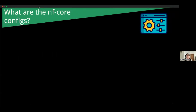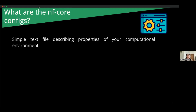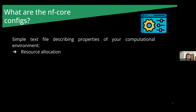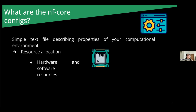What are the NFCore configs? They are simple text files that describe the properties of your computational environment, which is basically resource allocation — managing hardware and software resources to run processes in a computing environment. By hardware resources, I mean CPUs, memory, and disk storage. And with software resources, the libraries that models or pipelines need to access.